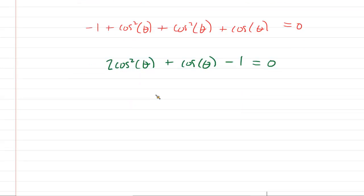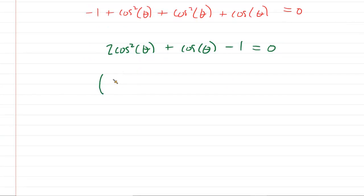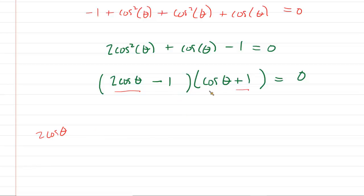This is somewhat miraculous because it looks like this is going to factor. We're going to have 2 cos(θ) times cos(θ), and we'll put a plus 1 here and a minus 1 there. Let's make sure that works. 2 cos(θ) times cos(θ) gives 2 cos²(θ), so that checks out. 2 cos(θ) times 1 is 2 cos(θ), and then cos(θ) times -1 is -1 cos(θ). Combining those gives positive 1 cos(θ), which is exactly what we have in the middle. So it does factor, which is nice.